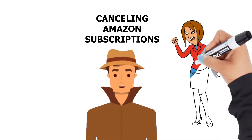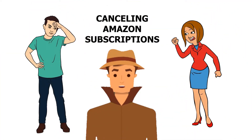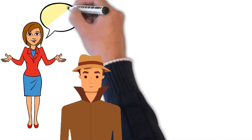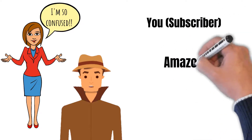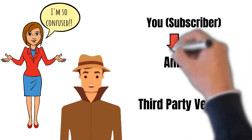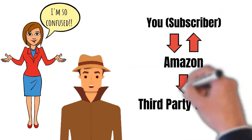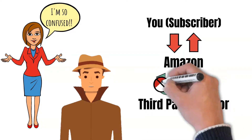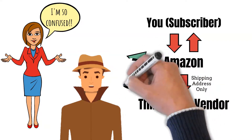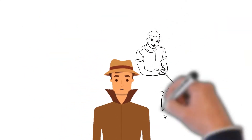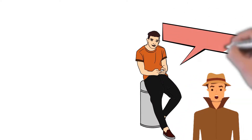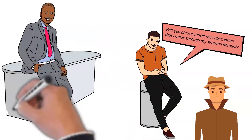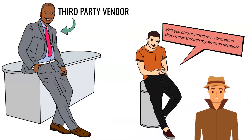Are you having trouble with your subscription through Amazon? If you subscribe to a third-party vendor through Amazon subscriptions, the third-party vendor has no control over your account. Amazon retains your account access and the vendor only has access to your shipping address to ship your subscription to you. If you contact the third-party vendor, there will be nothing they can do to modify your subscription because they don't have access to your Amazon account.